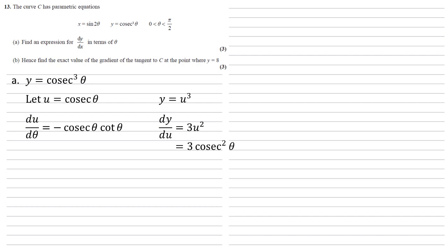So dy by dθ is going to equal dy by du times by du by dθ. That's our minus 3 cosec squared θ times cosec θ cot θ, which is minus 3 cosec cubed θ cot θ.